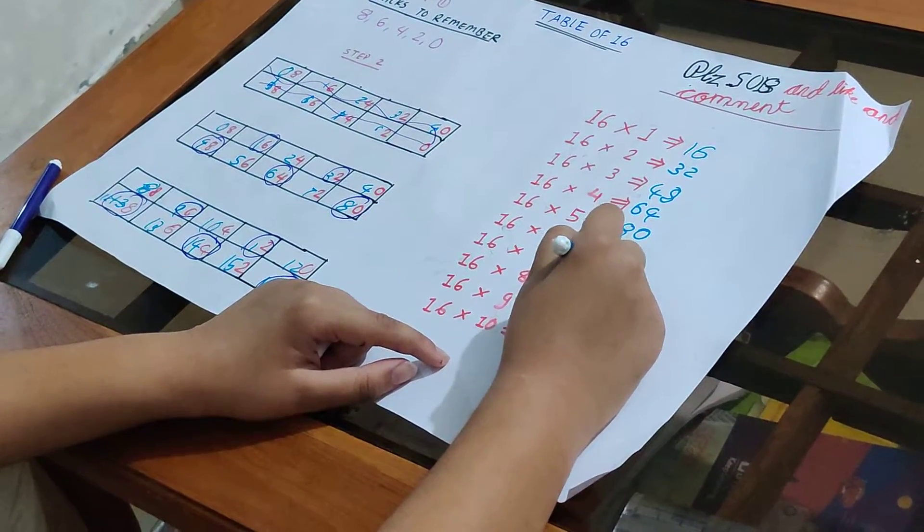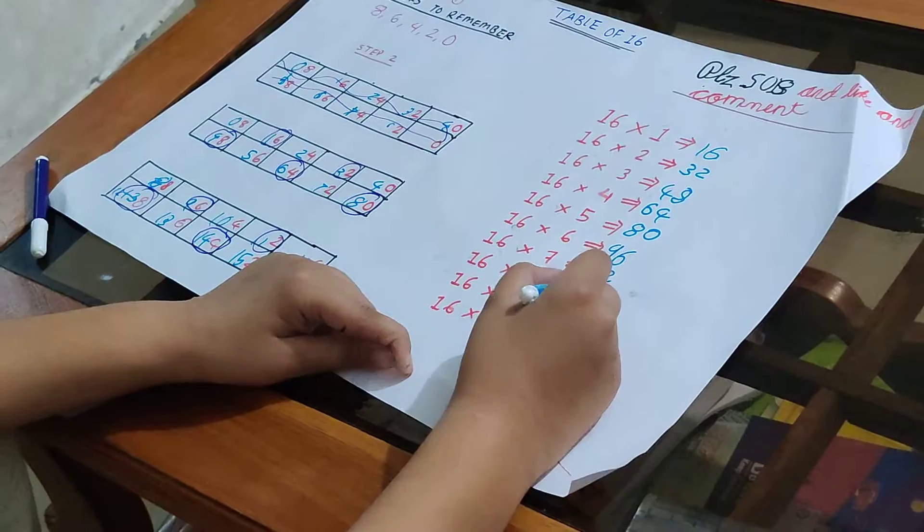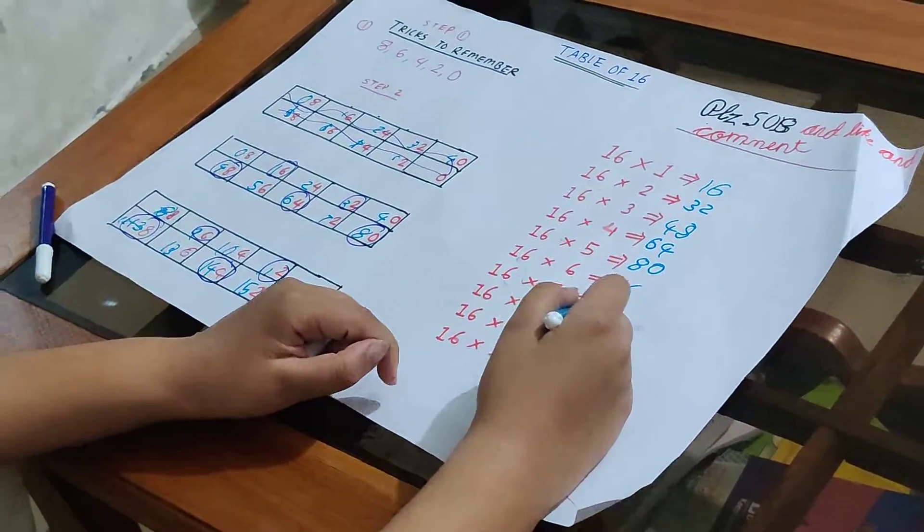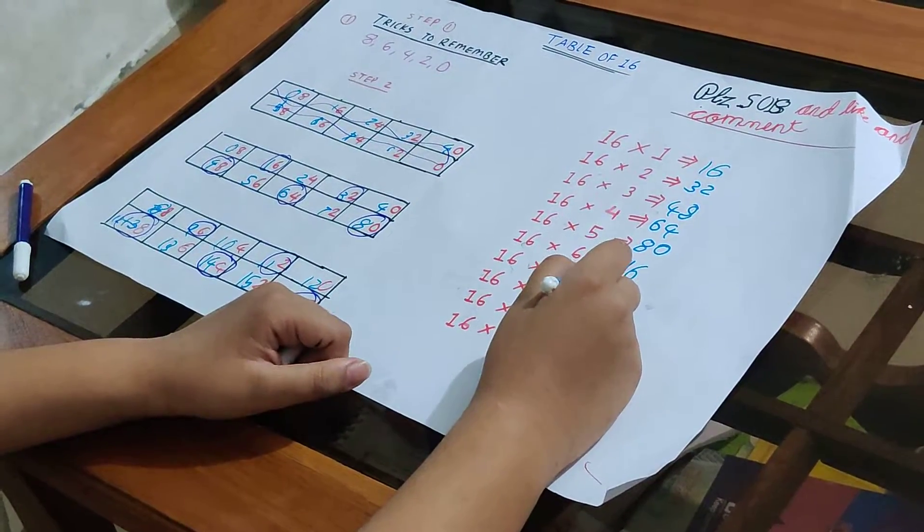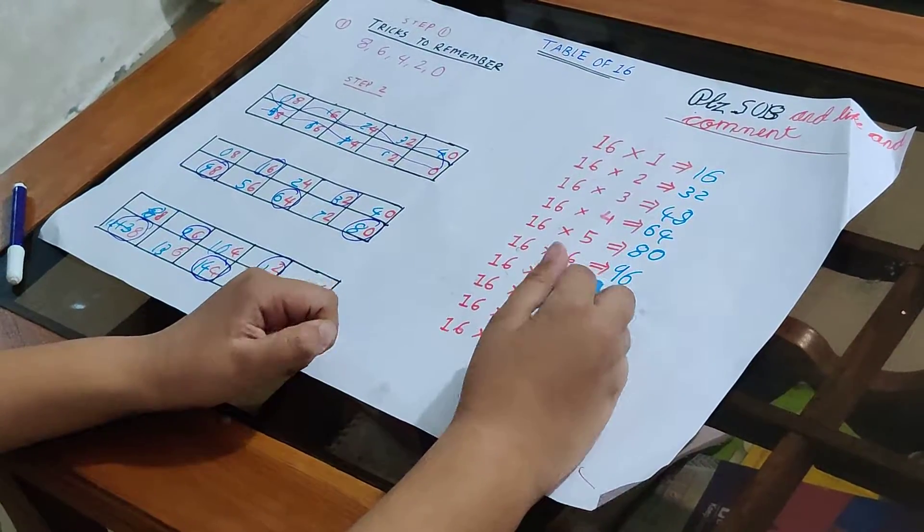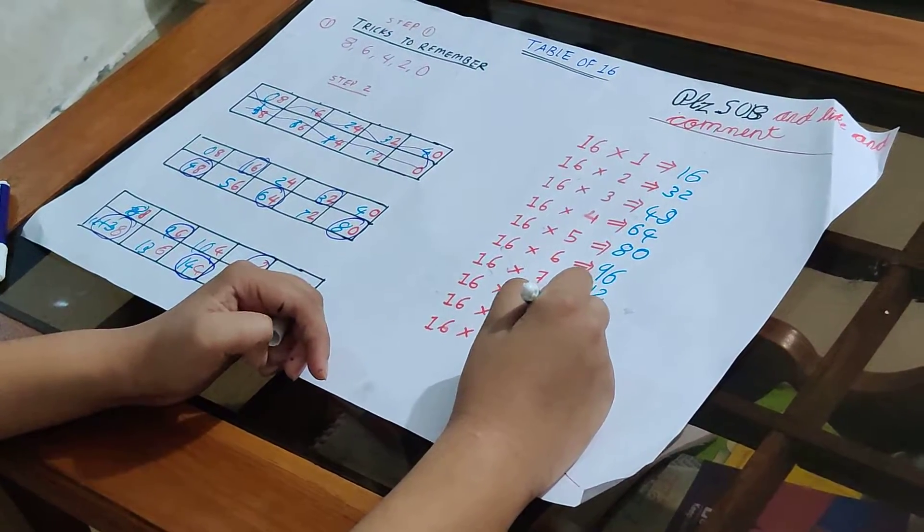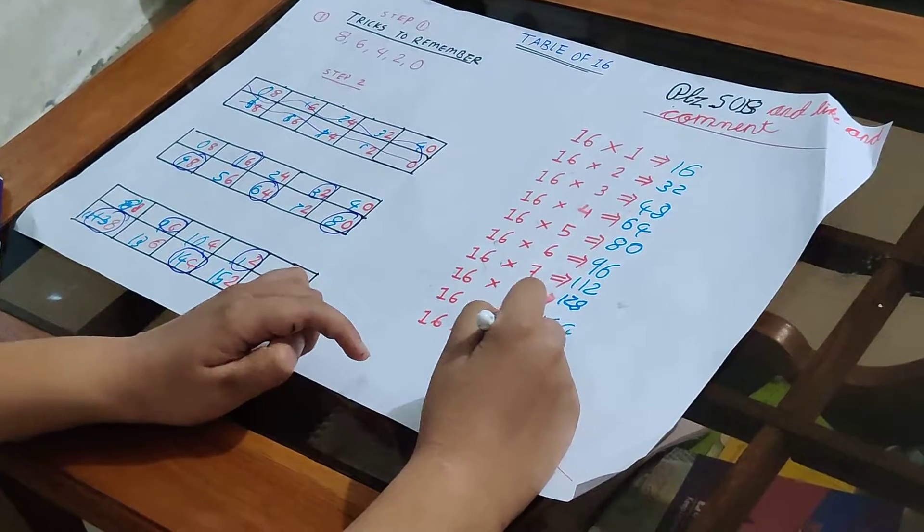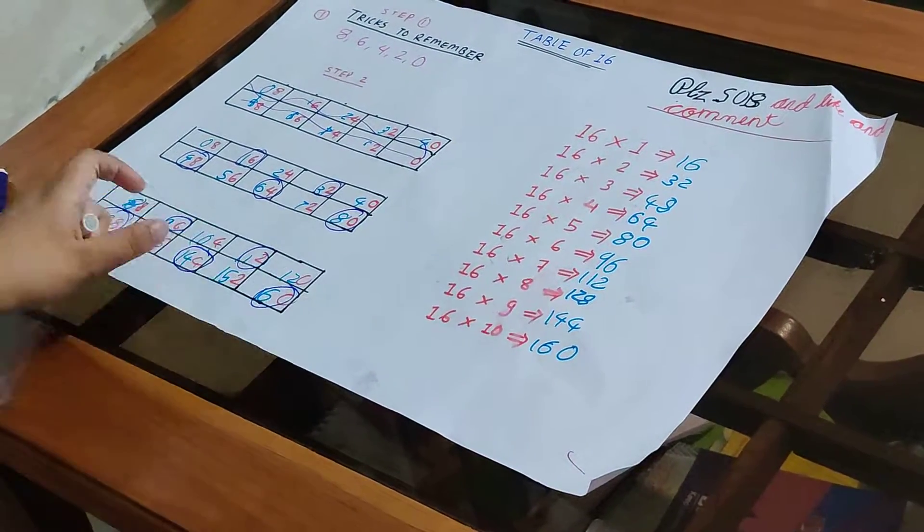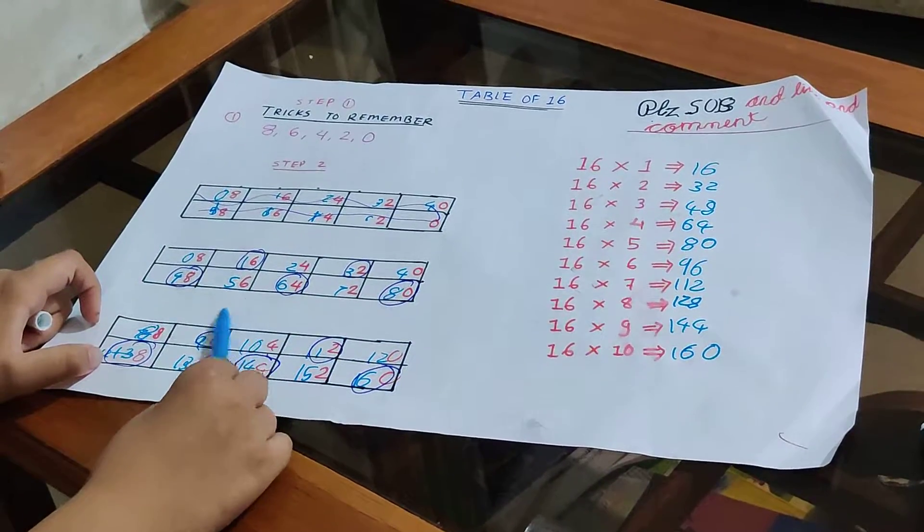12, and then wait a minute. Okay, then write 128 like this. And then the final, then you have the 16 tables. 8, 10, like that.